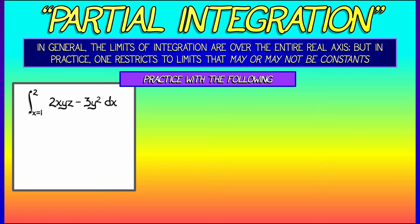These are nice numerical limits. In this case, y and z are considered constants. We anti-differentiate with respect to x. That gives us x²yz minus 3y²x.